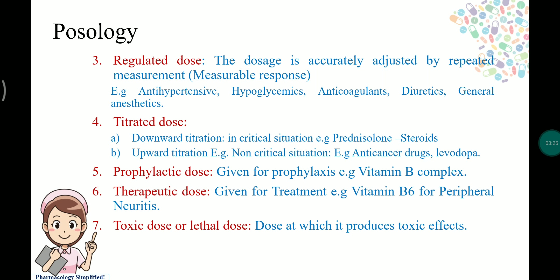Downward titration starts with a higher dose that is gradually reduced until the medication is stopped completely. It is used in critical situations like trauma; an example is prednisolone. Upward titration is used in non-critical situations, starting with a smaller dose and then increasing the dose levels.